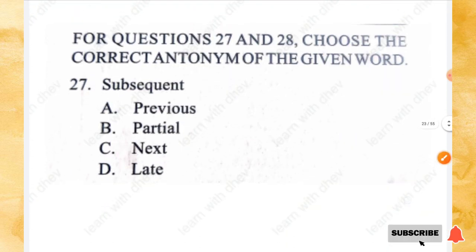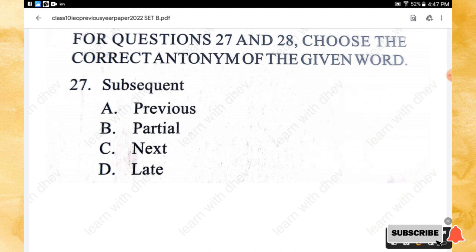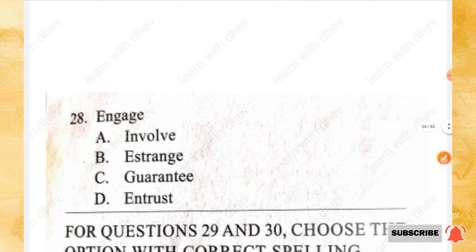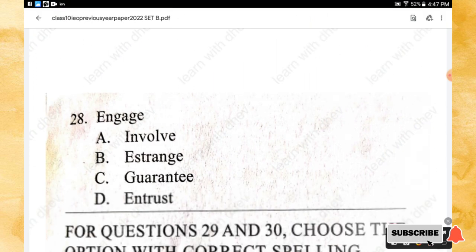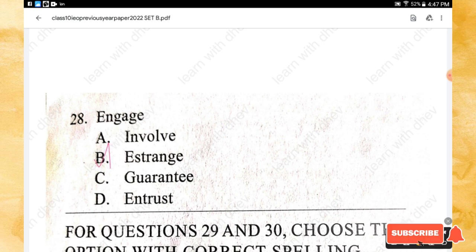For questions 27 and 28, choose the correct antonym. Question 27: Subsequent — options: previous, partial, next, late. The opposite is option A — previous. Question 28: Engage — options: involve, estrange, guarantee, interest. The opposite is option B — estrange.